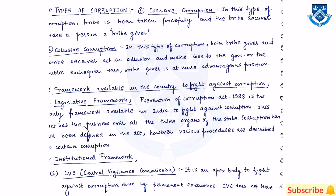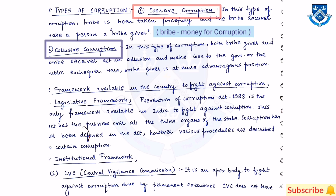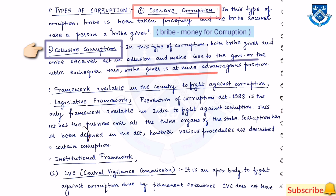Types of corruption: The first is coercive corruption, where a bribe is taken forcefully and the bribe receiver makes a person into a bribe giver. The second is collusive corruption, where both the bribe giver and bribe receiver act in collusion, and the bribe giver is placed in a more advantageous position.